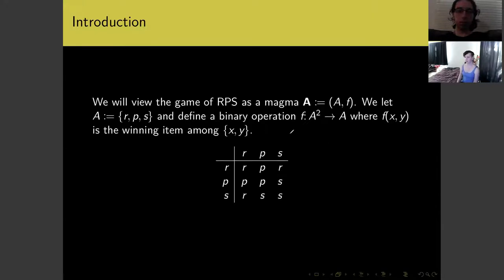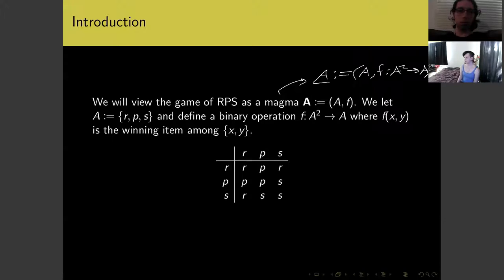We can think of the game rock, paper, scissors as a magma. I'll use bold A to indicate the algebraic structure itself, which consists of a set A and then some binary operation F, which takes pairs of things in A to some other thing in A. That's what I mean when I say a magma.